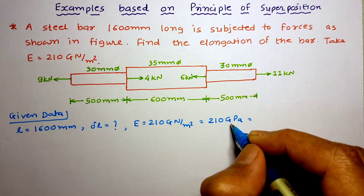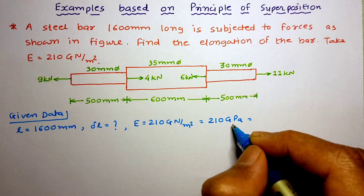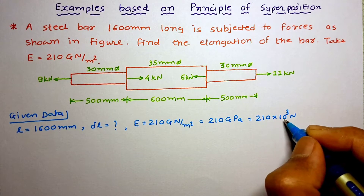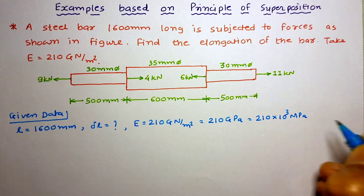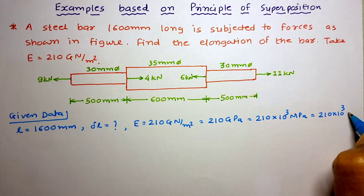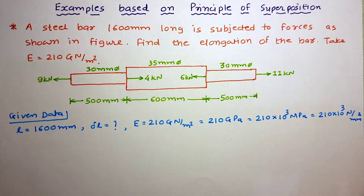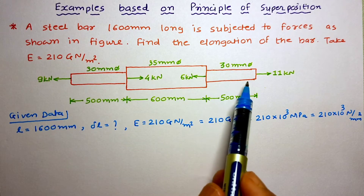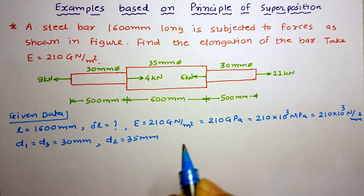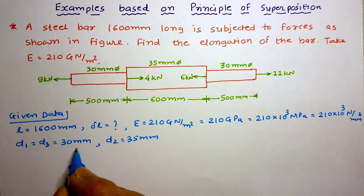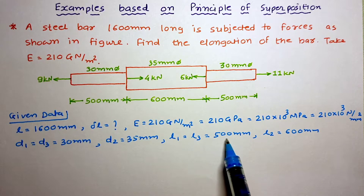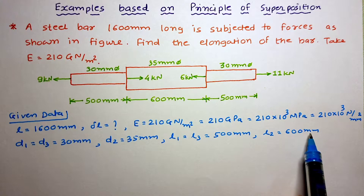We have to convert this gigapascal to megapascal, because megapascal equals newton per mm squared. So it will be 210 × 10³ MPa, which equals 210 × 10³ N/mm². From the figure, D1 and D3 are equal to 30 mm, D2 is 35 mm, L1 and L3 are each 500 mm, and L2 is 600 mm.